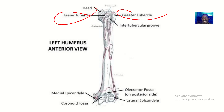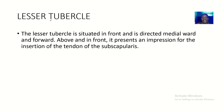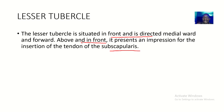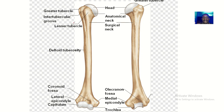The lesser tubercle is situated in front and is directed medialward and forward. Above and in front, it presents an impression for the insertion of the tendon of the subscapularis. The mnemonic for the rotator cuff muscles is SITS: S for supraspinatus, I for infraspinatus, T for teres minor, and S for subscapularis — and the subscapularis inserts on the lesser tubercle.